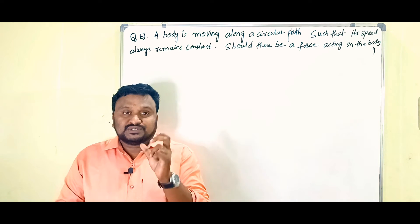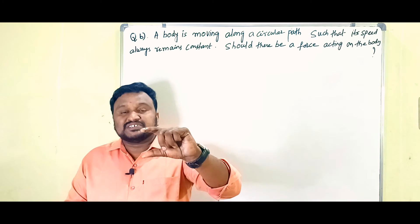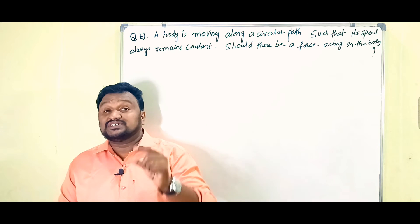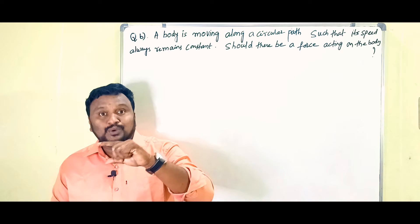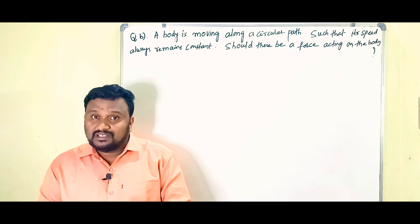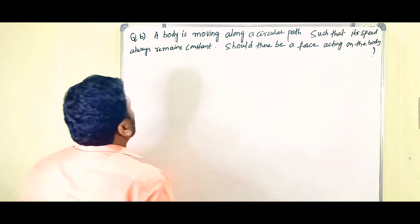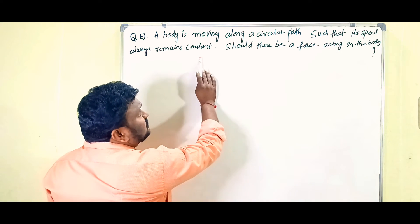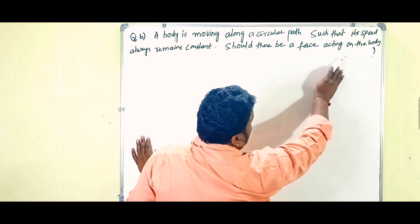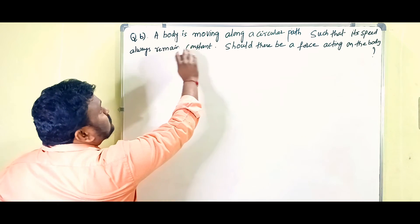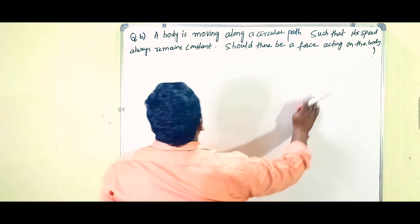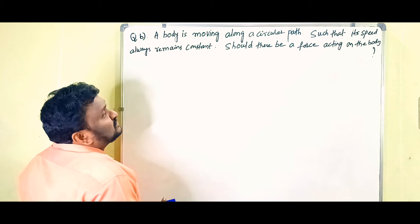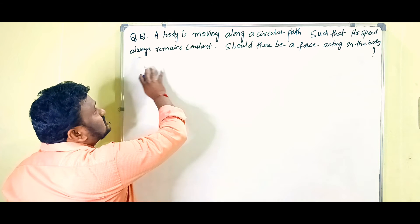In the long answer, Part A is 6 marks and Part B is 2 marks. The second part question is: a body is moving along a circular path such that its speed always remains constant — should there be a force acting on the body? Let's take one circular path. In that circular path, one body of mass m is moving, and the radius of the circle is r.